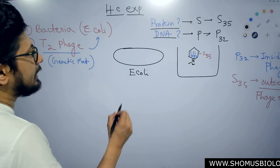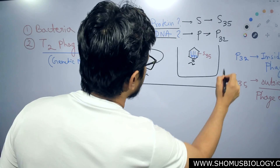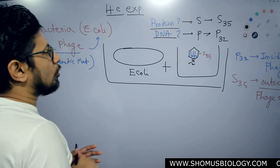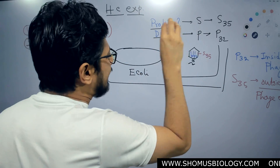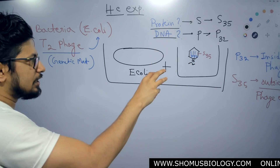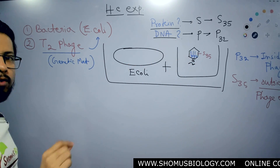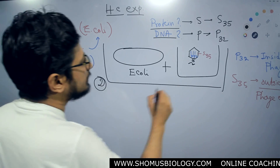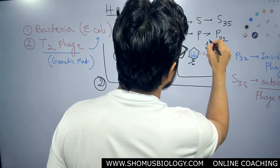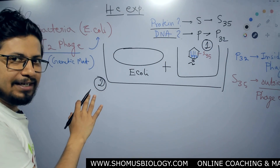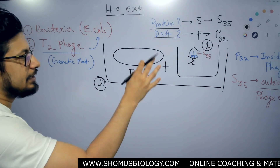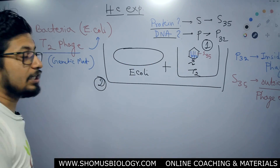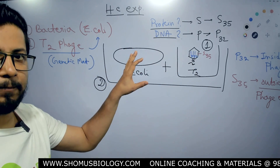The next step is they allow incubation — they allow the incubation of those radio-labeled phage with the host E. coli. This is the second step. The first step was the labeling. They want this T2 phage to transfer its genetic material to the E. coli.